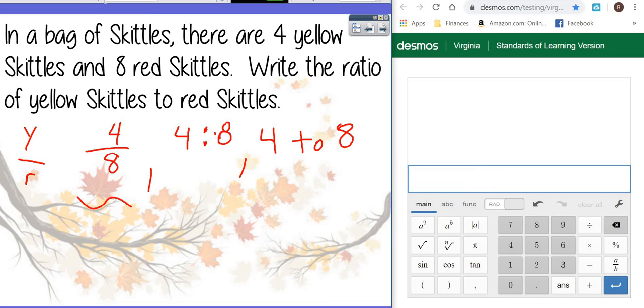So those are the three different ways that you can write a ratio. We usually stick with the fractions and when you're writing ratios in a fraction you do not have to simplify them. So on this first one four yellows to eight red would be written exactly those ways.